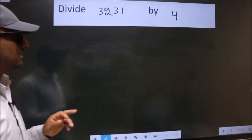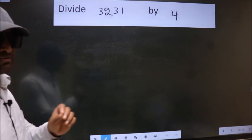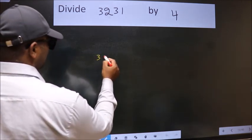Divide 3,231 by 4. To do this division, we should frame it in this way: 3, 2, 3, 1 here.